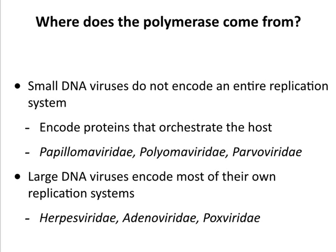Small DNA viruses don't have an entire replication system; they encode at least one protein that orchestrates the host — distracting it from replicating its own DNA to replicating theirs. These are papillomaviruses, polyomaviruses, and parvoviruses. The large DNA viruses have more room, so they can encode more of their replication system — herpesviruses, adenoviruses, and poxviruses — and we'll talk about those today as well.